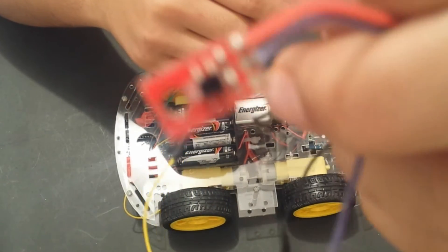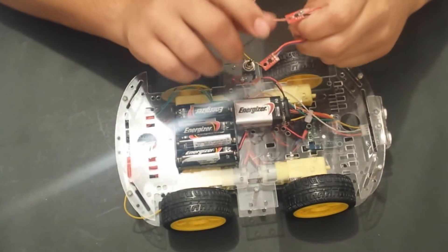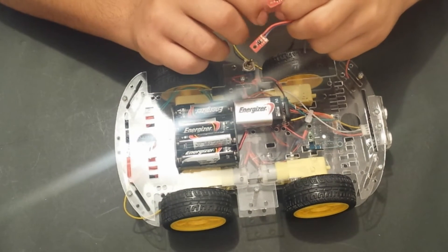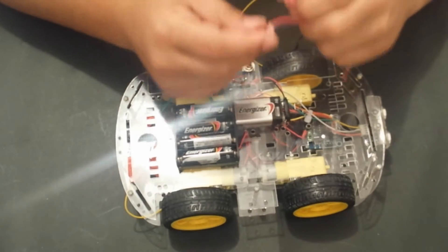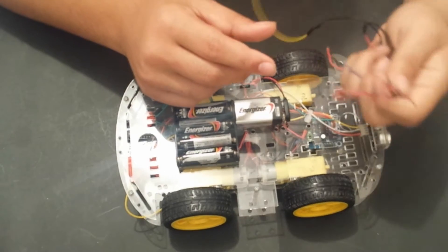But there are two types of these line following modules. There is the digital and the analog type. I really suggest that you do not buy the digital ones because they are much harder to program. These are the analog ones and they are very easy to use.